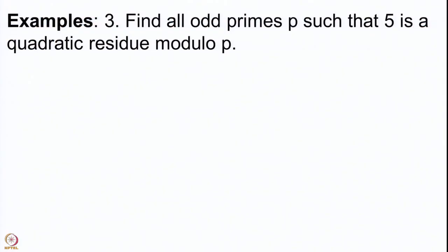We will now do a similar example for 5. We want to compute all odd primes p such that 5 is a square modulo p. We look at odd primes because if p is 2 then every odd number is congruent to 1 modulo 2, so every odd number is a square modulo 2. We only need to consider odd primes for the actual computation.